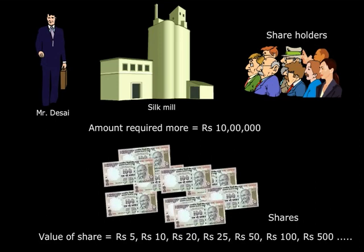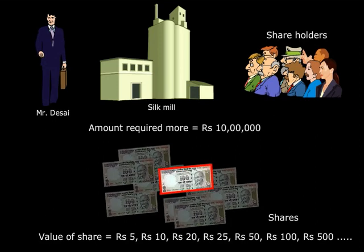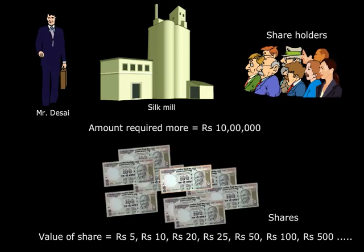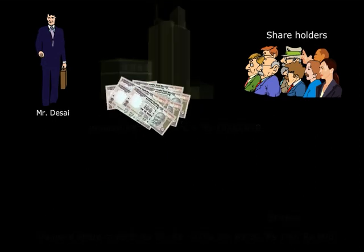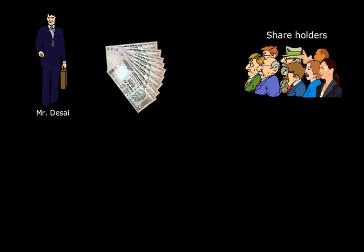In this case the value of each share is rupees 100. So by combining these small amounts from all the shareholders, Mr. Desai can now commence his work on his silk mill.